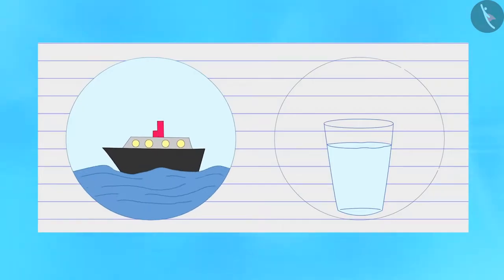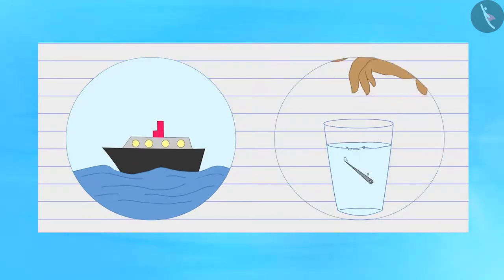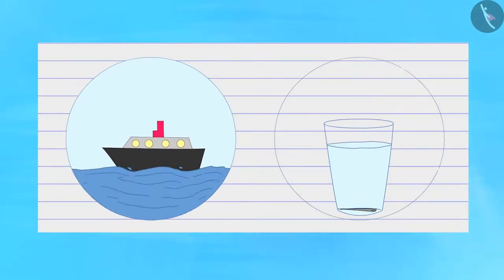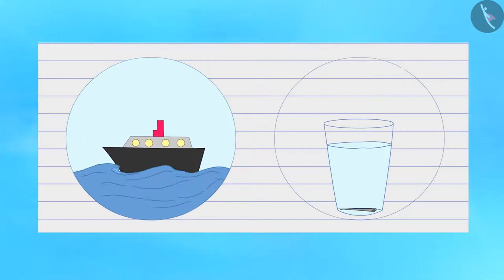Why does a huge ship made from iron and steel float on water, while a small needle sinks in the water? Now let us perform an activity to understand the role of buoyancy in these two instances.